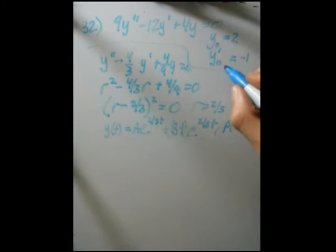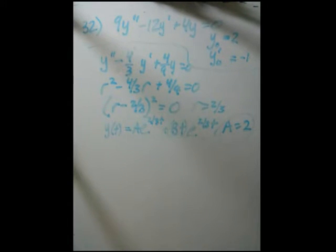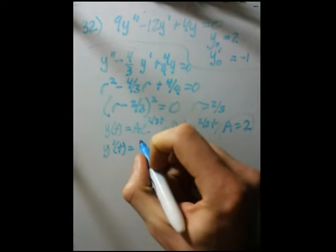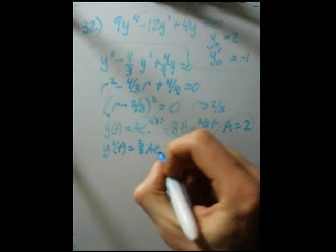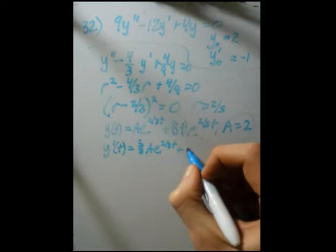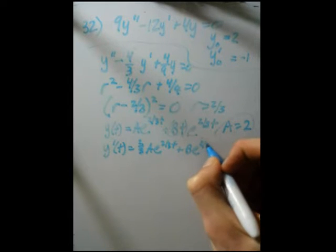Now, our next one is taking the derivative at time equals 0. So we'll take the derivative. Y prime of t is equal to 2 thirds a e to the 2 thirds t. And now, using a product rule here, the derivative of the first times the second, plus the derivative of the second, which is, brings down to 2 thirds, times the first. Okay. Yeah.